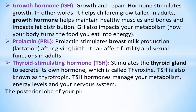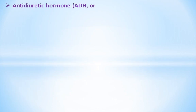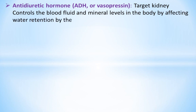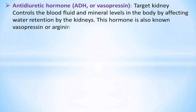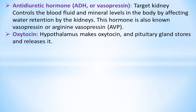The posterior lobe of the pituitary gland stores and releases the following hormones, which the hypothalamus makes. Antidiuretic hormone (ADH), or vasopressin, targets the kidney and controls blood fluid and mineral levels in the body by affecting water retention. This hormone is also known as arginine vasopressin (AVP). The hypothalamus makes oxytocin, and the pituitary gland stores and releases it.